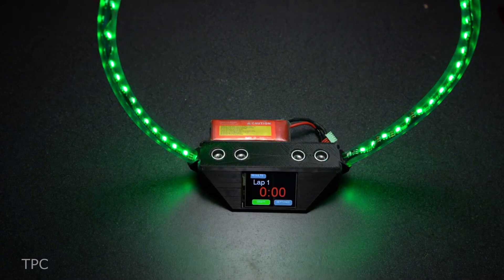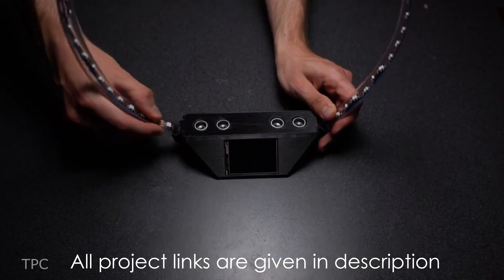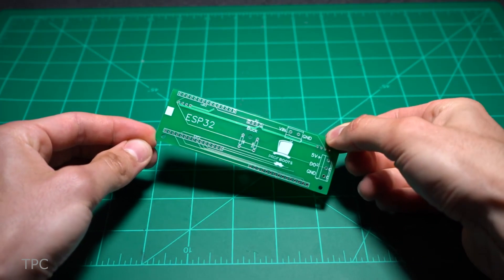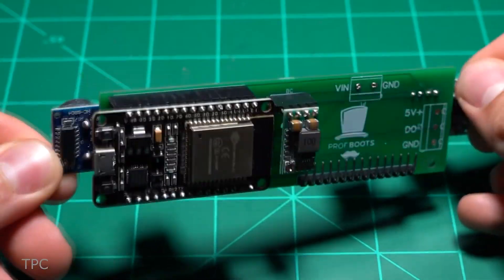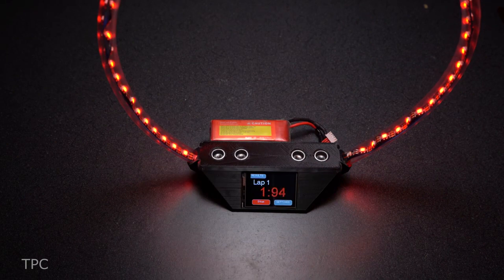Inside the neat 3D printed enclosure, the electronics are assembled on a PCB. The PCB includes an ESP32 board, a buck converter, and two ultrasonic sensors on the flip side, ensuring the project's compactness.